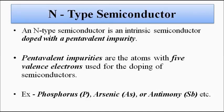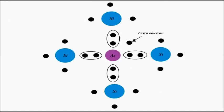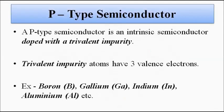Now let's look at the formation of P-type semiconductors. P-type semiconductors are those doped with trivalent impurity — atoms with three valence electrons in the outer valence band. Examples of commonly used trivalent impurities include boron, gallium, indium, and aluminum. Let's see how P-type extrinsic semiconductor formation takes place.